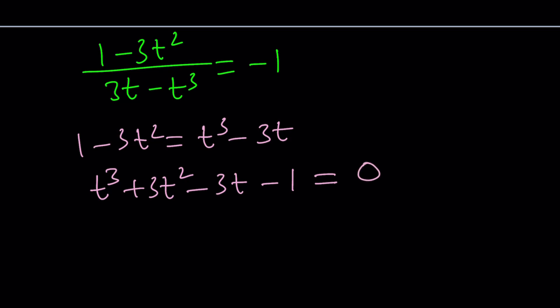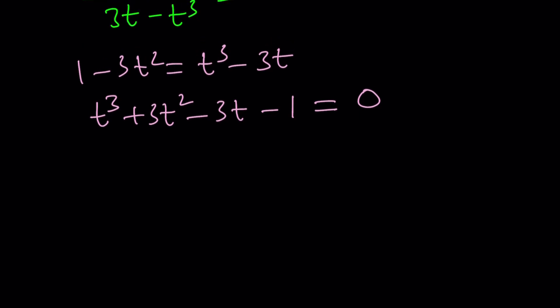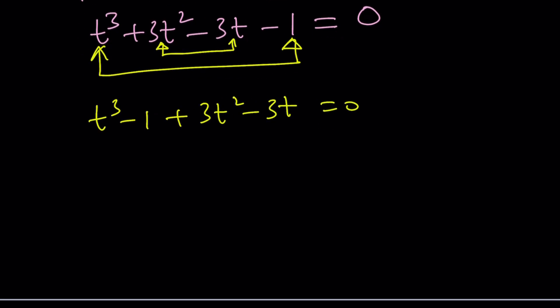Putting everything on one side: t³ + 3t² - 3t - 1 = 0. This might look complicated, but it's factorable by grouping. Group (t³ - 1) + (3t² - 3t) = 0. Factor as (t - 1)(t² + t + 1) + 3t(t - 1) = 0.